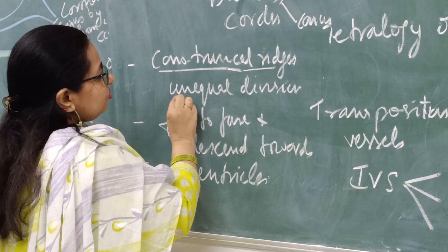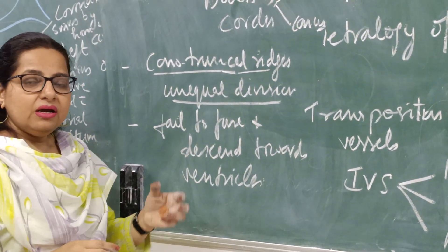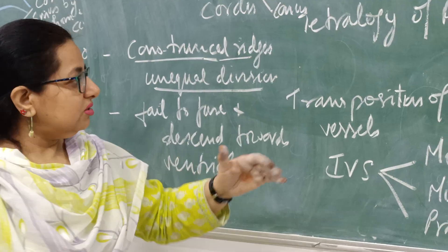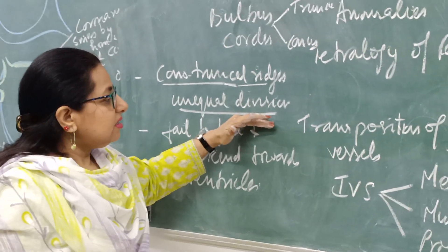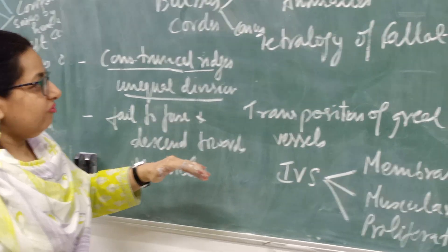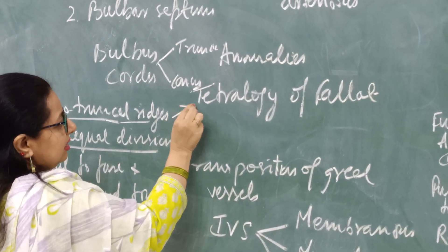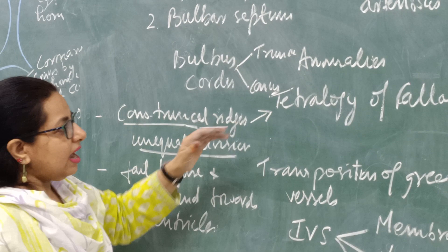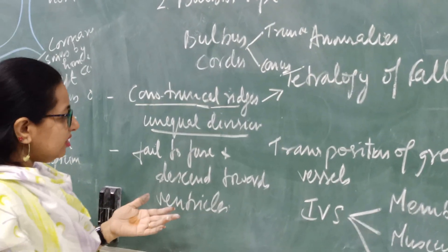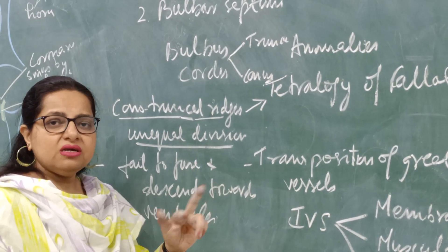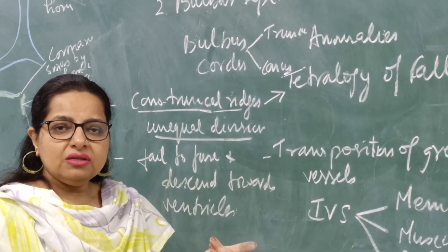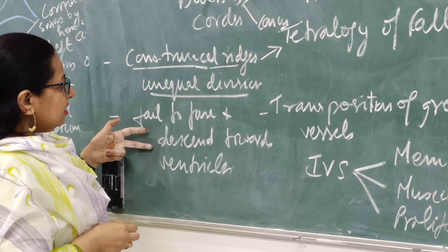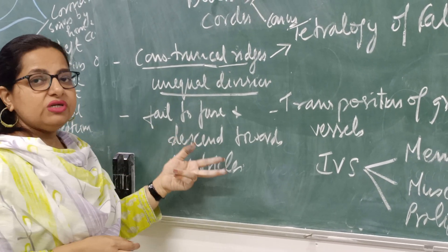If there is unequal division of the conotruncal ridges, one channel will get stenosed and another will be broader. In that case there is a condition known as Tetralogy of Fallot. In Tetralogy of Fallot there is unequal division of the conotruncal ridges. There is another condition in which there is transposition of the great vessels — the aorta will arise from the right ventricle whereas the pulmonary trunk will arise from the left ventricle, because the conotruncal ridges fail to fuse and descend towards the ventricles.